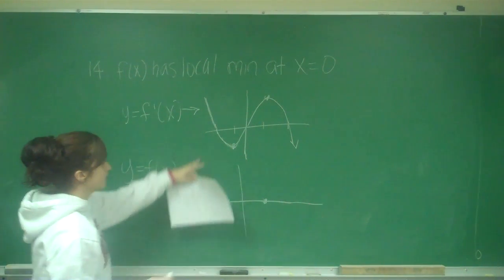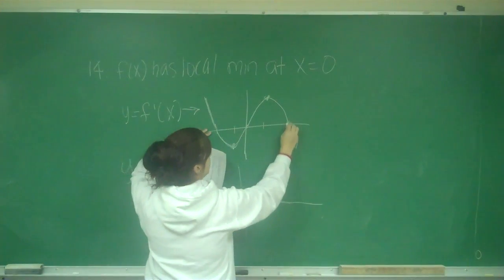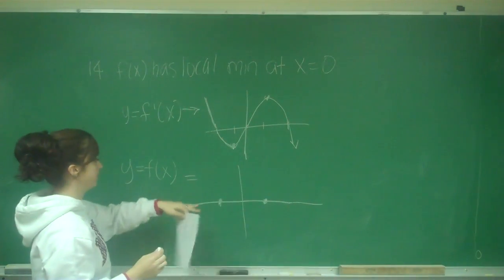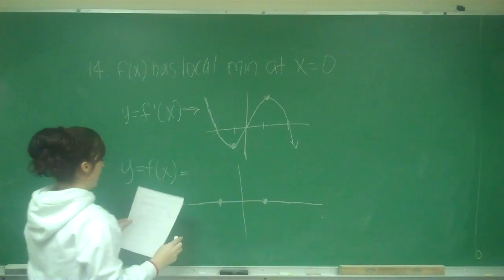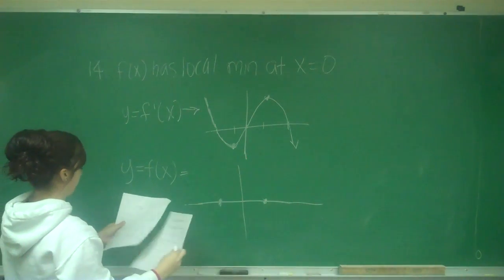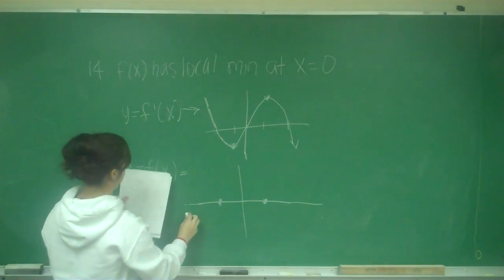When it crosses the x-axis on my derivative, it's going to be either a min or a max on my position graph. So this is above the x-axis, so I'm going to have a positive slope. It doesn't matter where it starts, so I have a positive slope.